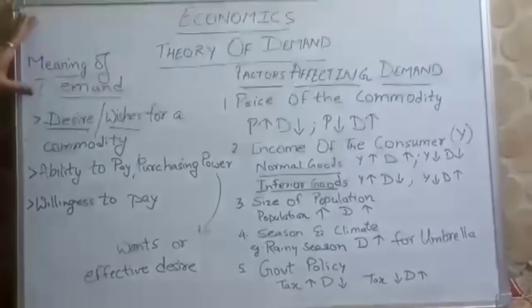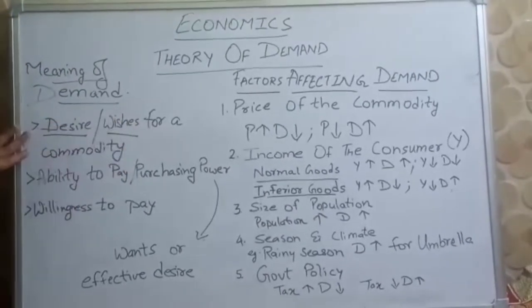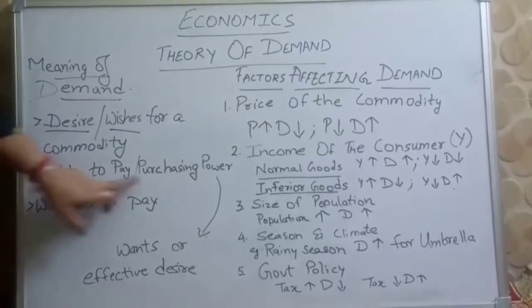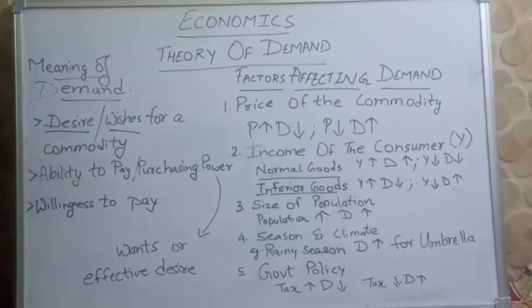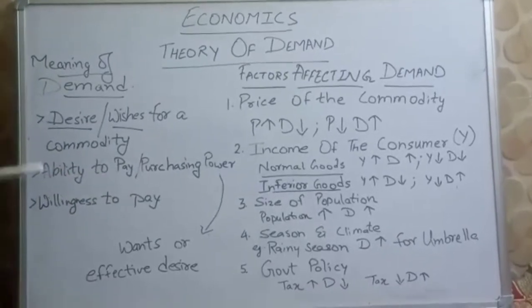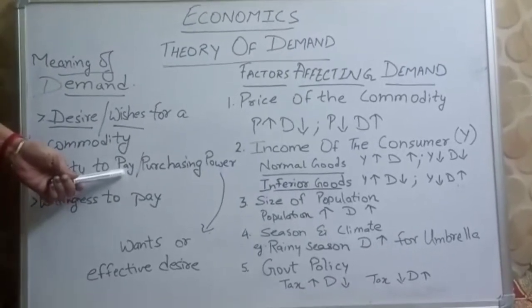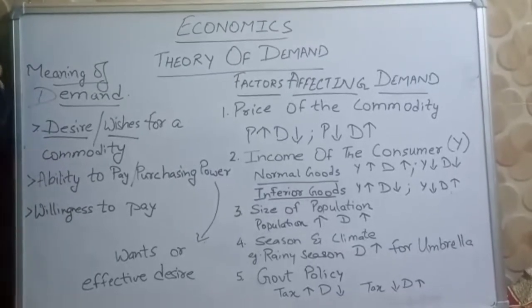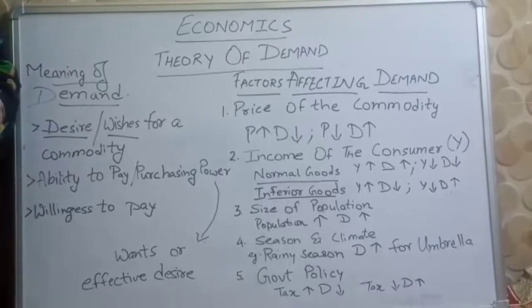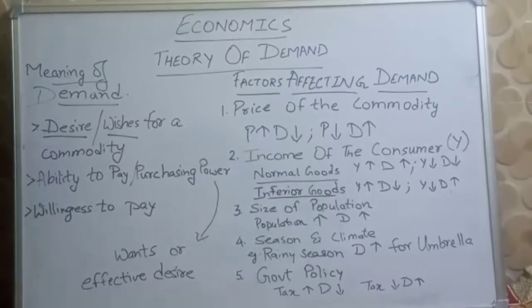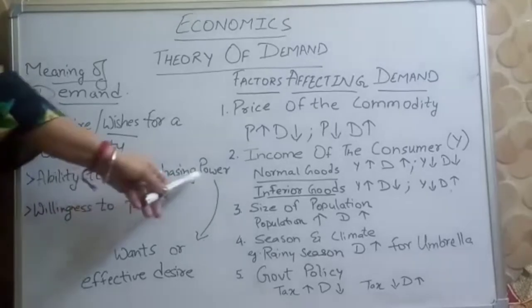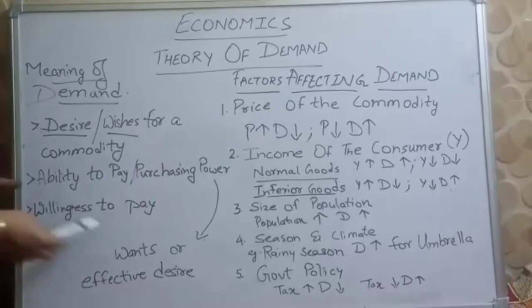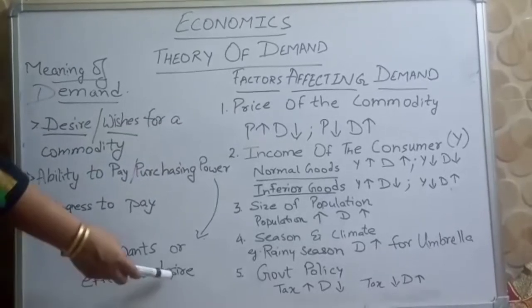Demand in economics includes desire or wishes. With that, it includes two more things: ability to pay and willingness to pay. Ability to pay means how much you can purchase — your purchasing power, the extra income you have. When we include desire and ability to pay, it is termed as wants or effective desire.